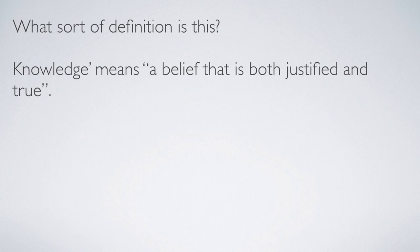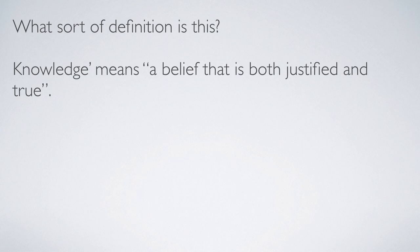Now for the first exercise. The definition is: knowledge means a belief that is both justified and true. What sort of definition is this? Before looking at the options, consider: is it definition by exclusion, extension, or intention? Nowhere in this definition is there any notion about how knowledge is not something, so we can leave aside exclusion. It's either extension or intention. Is it pointing at different examples or particular cases? Or is it pointing to meaning?